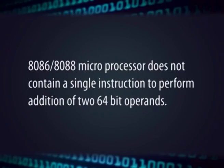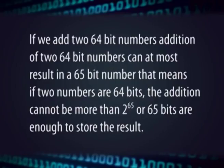Let us take a problem of adding two 64-bit numbers. As all of us are aware, the 8086 or 8088 microprocessor does not contain a single instruction to perform addition of two 64-bit operands, because there is no such instruction available. So we have to write a program so that we can accomplish the addition of two 64-bit numbers. As we can observe, if we add two 64-bit numbers, the addition can at most result in a 65-bit number.